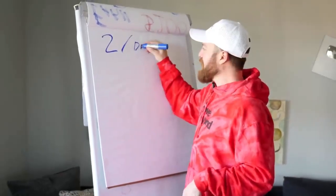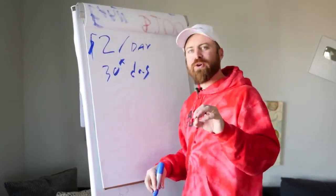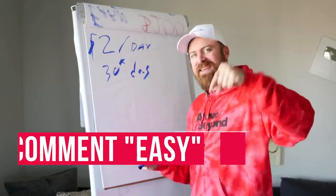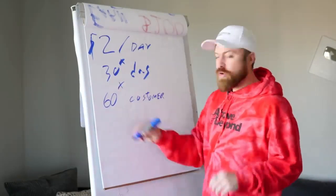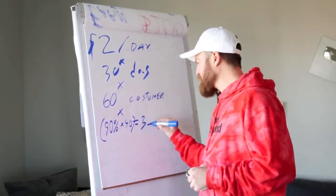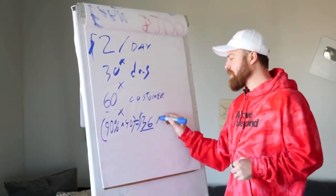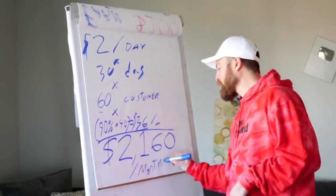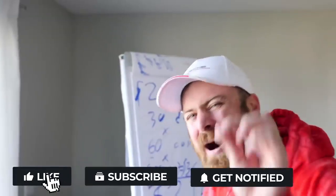Imagine if you just got 2 people every single day to spend $1. How much recurring revenue would you have? Let's do the math: 2 people a day times 30 days — that's 60 customers. The recurring revenue is 90% of $40, which is $36. So 60 customers times $36 a month leaves you with $2,160 in monthly recurring revenue. If you can get 2 people to spend $1 every day, you'll be getting over $2,000 a month in recurring revenue.